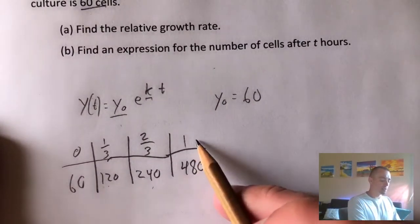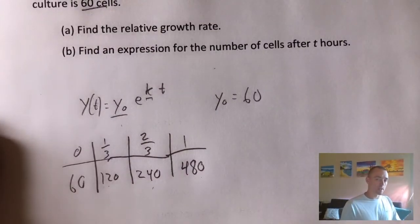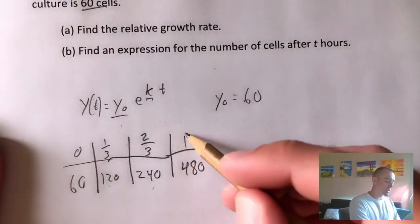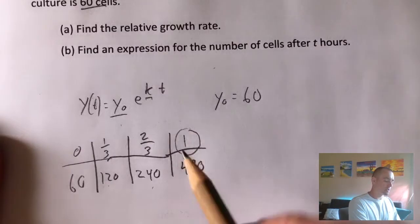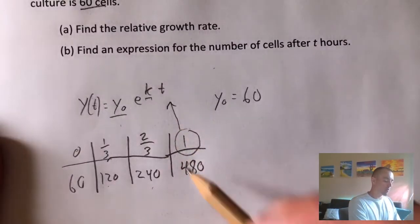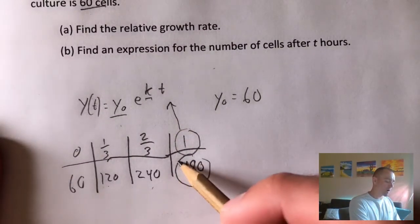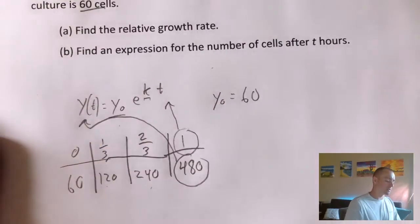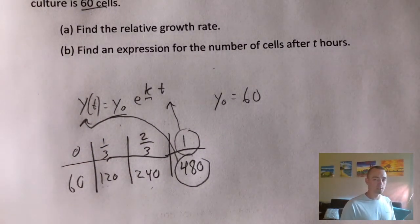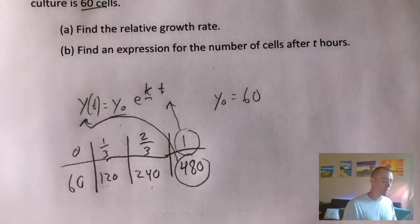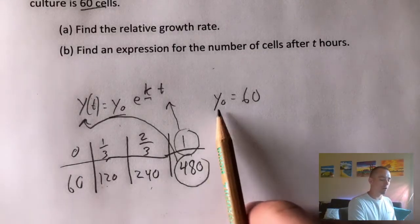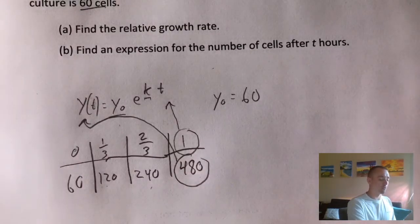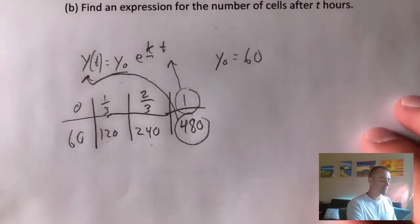So basically, when t is one, we should have 480 cells. So we can take this for t, we can take this for our y, since this function should represent the total number of cells when t is whatever number, in this case one, and then we obviously already know our y sub zero is 60. So if we plug in all that information into this formula,